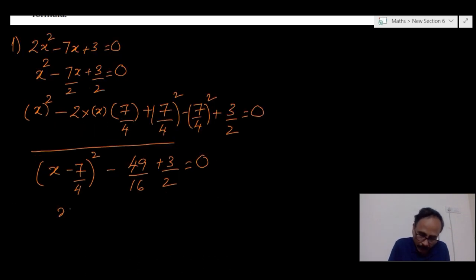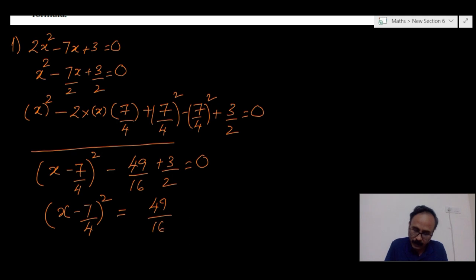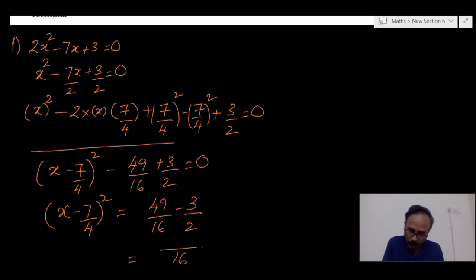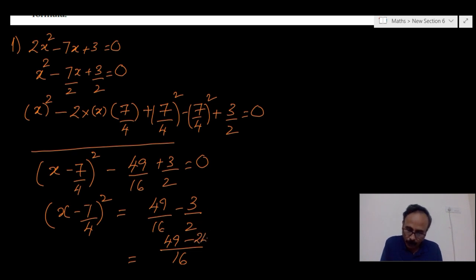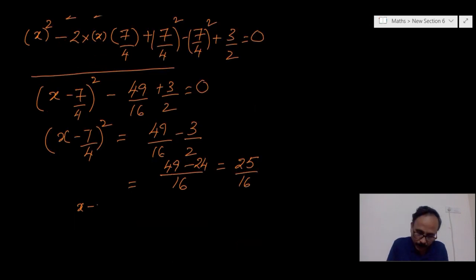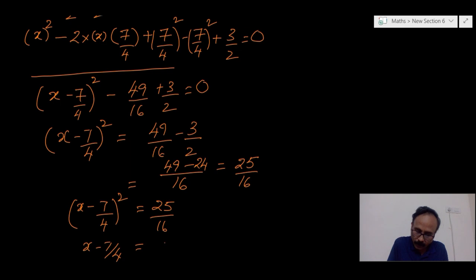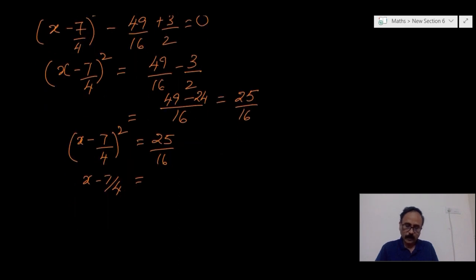Now, to find the value of x, we keep x terms on one side and send all other terms to the right side. Here, 2 eights are 16, 8 threes are 24, so finally we get 25/16. Now, (x minus 7/4)² is equal to 25/16. Therefore, x minus 7/4 is equal to the square root of 25/16, which is plus or minus 5/4.